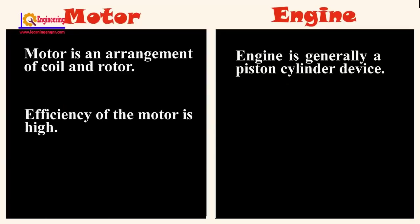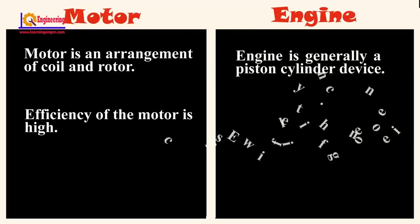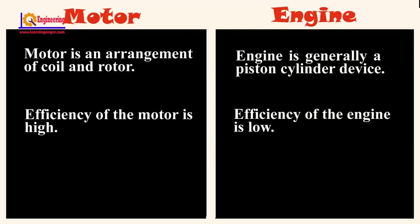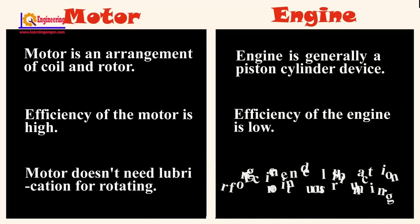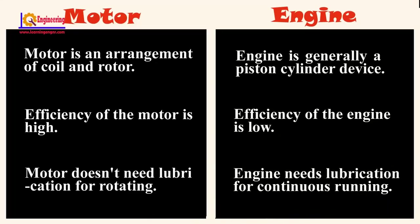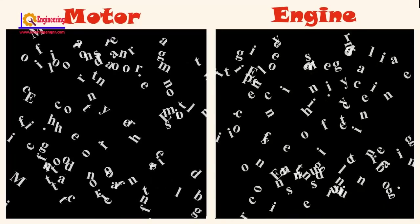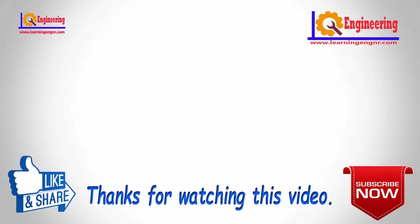The efficiency of a motor is high. The efficiency of an engine is low. A motor does not need lubrication for rotating. An engine needs lubrication for continuous running.